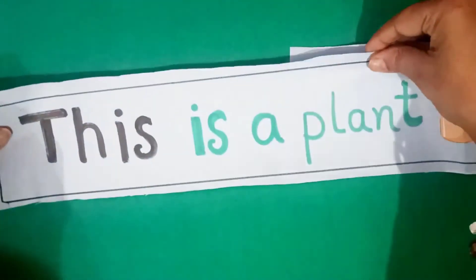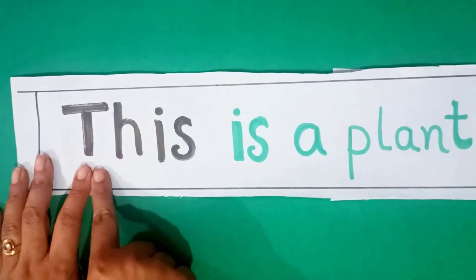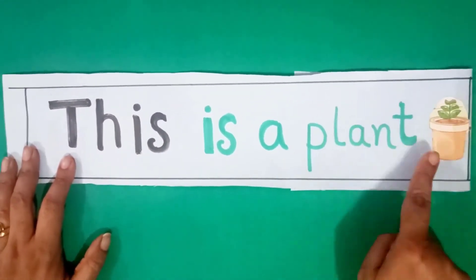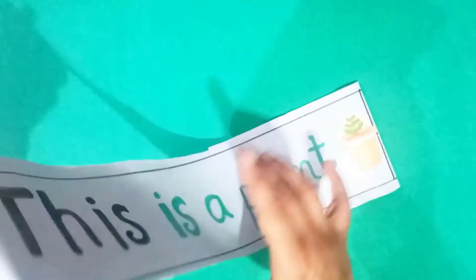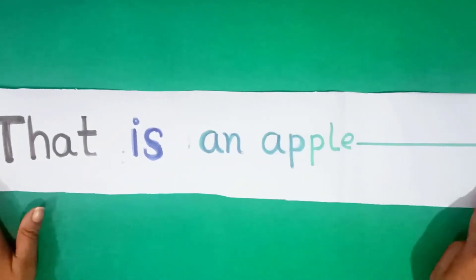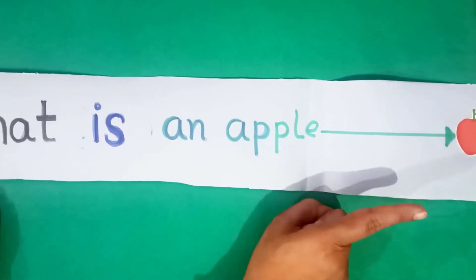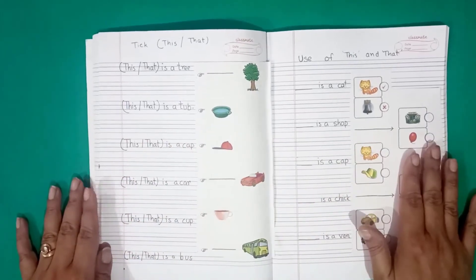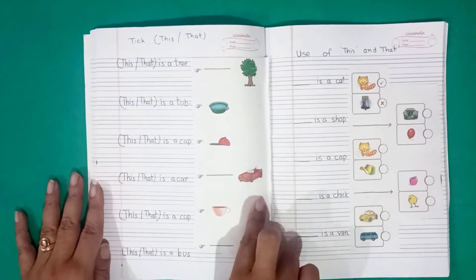One more example I will give you to make it more clear. This is a plant. This is a plant. It is near. Now, look here. That is an apple. That is an apple. Like this. You learn this and that. And do the worksheet. I will show you two worksheet here.